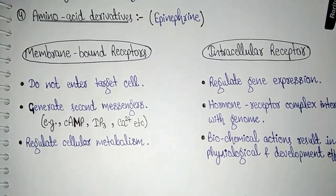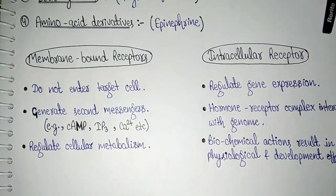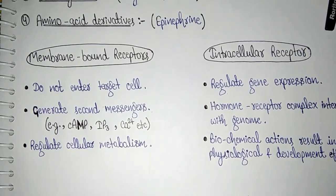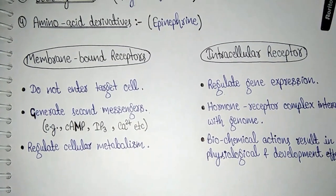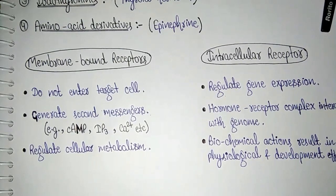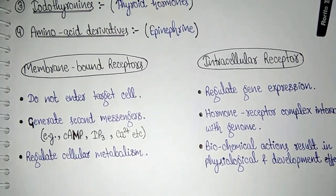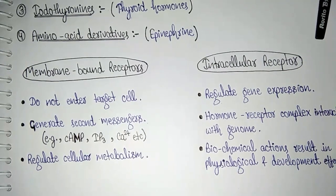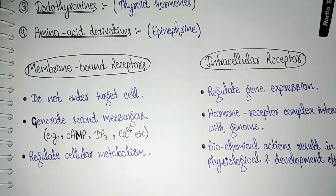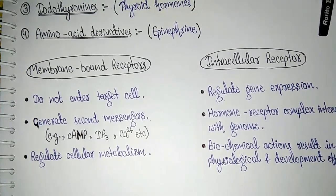Membrane bound receptors ke saath generally humare peptide hormones bind karte hai. Wahi agar intracellular receptor ki baat ki jaye, toh jo steroid hormones hai woh intracellular receptors ke saath bind karte hai. Reason kya hai? Ki jo hamari plasma membrane hoti hai woh lipids ki bani hoti hai. Toh kya hota hai — jo peptide hormone hoti hai woh membrane cross nahi kar paate, isliye woh membrane bound receptors ke saath bind hoke jo functions hai woh perform karte hai. Lekin steroid hormones kaisi hoti hai — lipid soluble hoti hai, toh iska matlab hai ki woh plasma membrane ko cross kar jayenge.